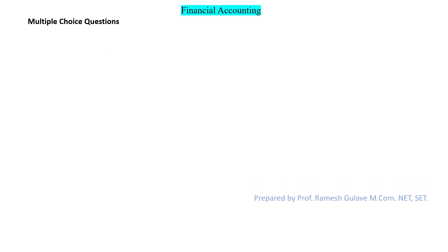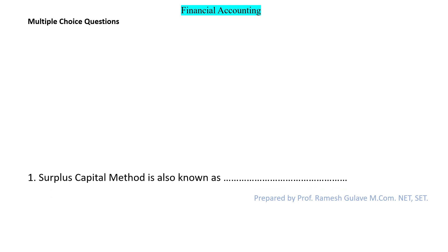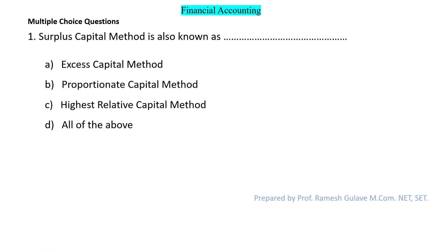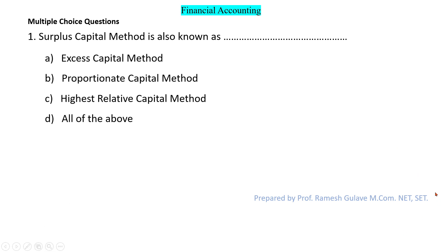Hello friends, in this video we are going to discuss important multiple choice questions on piecemeal distribution of cash and single entry system. The first question says: surplus capital method is also known as — options are excess capital method, proportionate capital method, highest relative capital method, and all of the above.